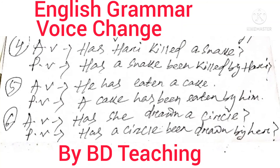In this way we can change from active voice to passive voice, and also from passive voice to active voice, in English grammar for present perfect tense — for affirmative, negative, and interrogative sentences.